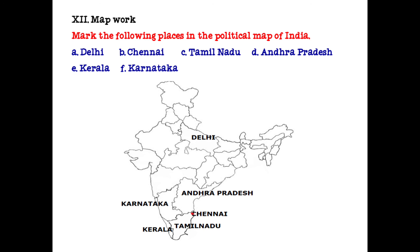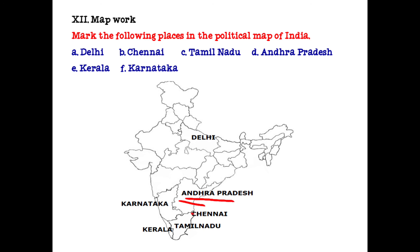Map work. Mark the following places in the political map of India: Delhi, Chennai in Tamil Nadu, Tamil Nadu state, Andhra Pradesh, Kerala, and Karnataka.